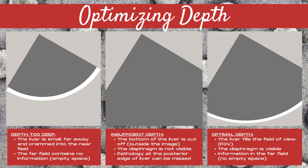So how do you optimize the depth on an ultrasound image? Here are three scenarios using the liver as a guide. In the first image to the far left, the depth is too deep. The liver is small in the image, far away, and crammed up into the near field of the image, and the far field of the image contains no information — this is empty or dead space. When you can help it, you never want to have empty or dead space on your ultrasound image.